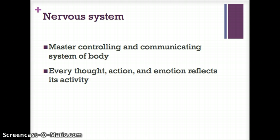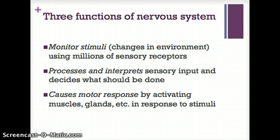There are three functions of our nervous system. First, we monitor stimuli — any kind of changes going on in the environment, we're detecting that. Then we process and interpret sensory input and decide what should be done. Then that causes a motor response by activating our muscles and glands.